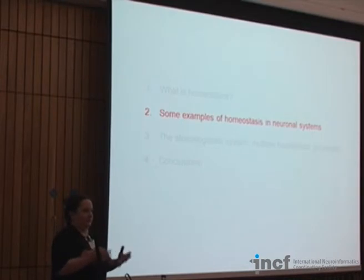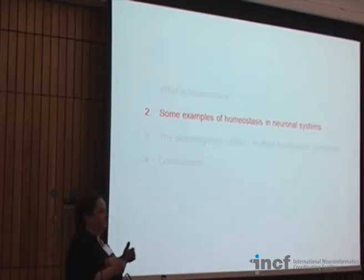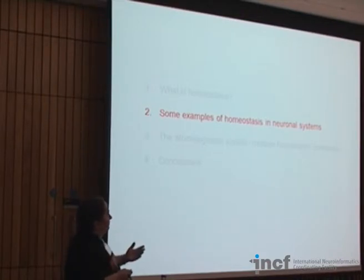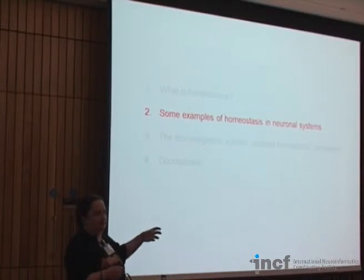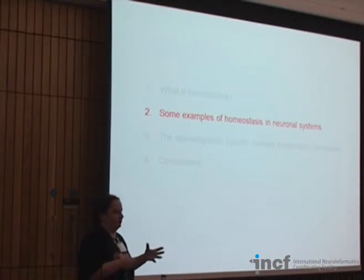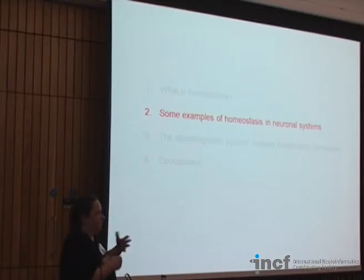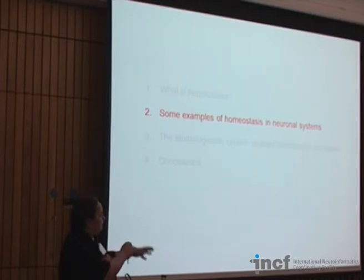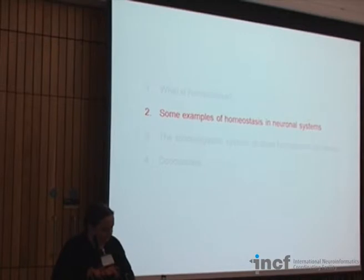That was a general homeostasis overview. Let's now look at some specific examples. I'll just show these to give you a flavor of what different types of homeostatic processes exist, without going too much into molecular or physiological detail, but to give you a sense of what can be maintained and what parts of the neural system are involved.